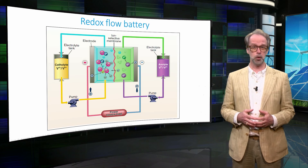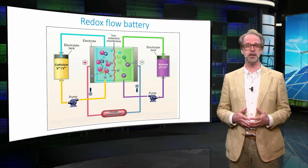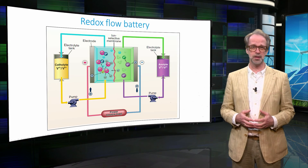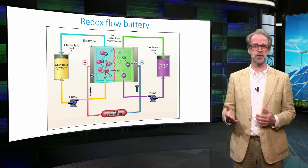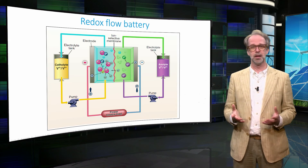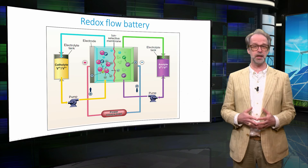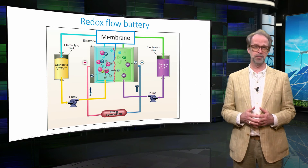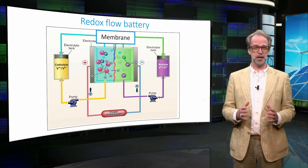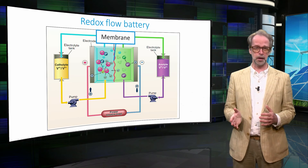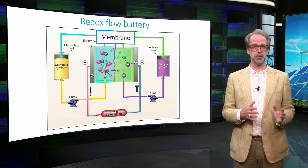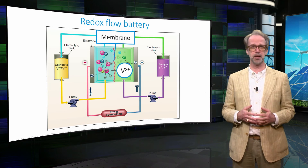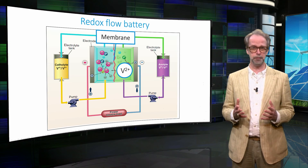Now we come to the redox flow battery. A redox flow battery is different from a normal battery — in this case the storage functionality is decoupled from the electrode at which the reaction takes place. Also in this case we have two compartments separated by an ion-selective membrane, each containing an electrolyte and an electrode. The electrolyte contains vanadium ions in different charge states: at the right we have mainly 2+ ions and at the left we have mainly 5+ ions.